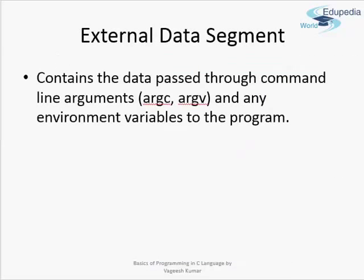The description of the segments is shown here, and we shall start from the topmost segment — the external data segment. As discussed, it contains the data passed through command line arguments via argc and argv. We will learn what command line arguments are in a matter of some chapters. This segment also contains any environment variables that have been set in the operating system environment where the program is running.